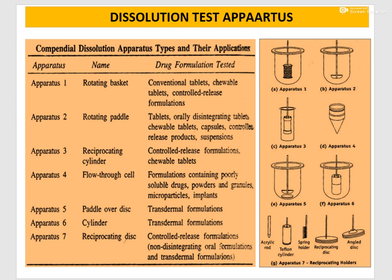This slide depicts various types of dissolution apparatus and their uses. Apparatus 1 is the rotating basket, useful for conventional tablets, chewable tablets, and controlled release formulations. Apparatus 2 is the rotating paddle, useful for tablets, orally disintegrating tablets, chewable tablets, capsules, controlled release products, and suspensions.